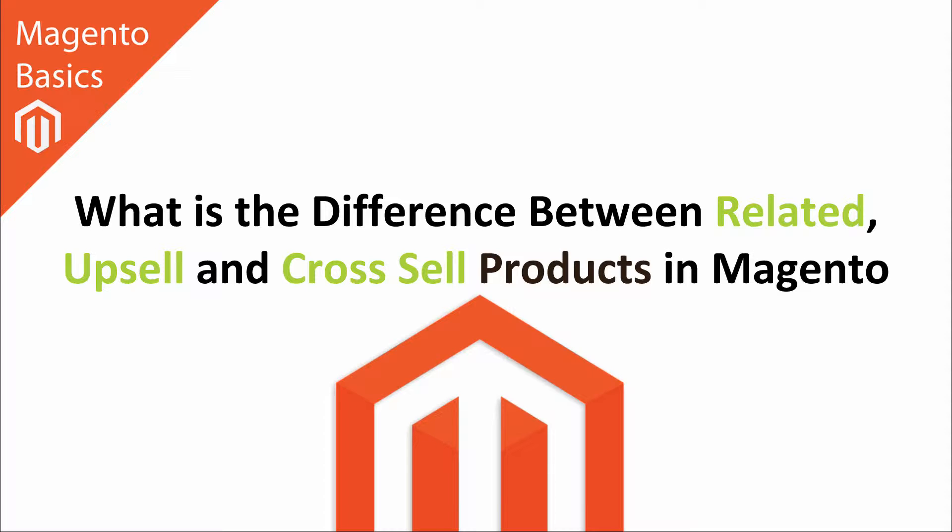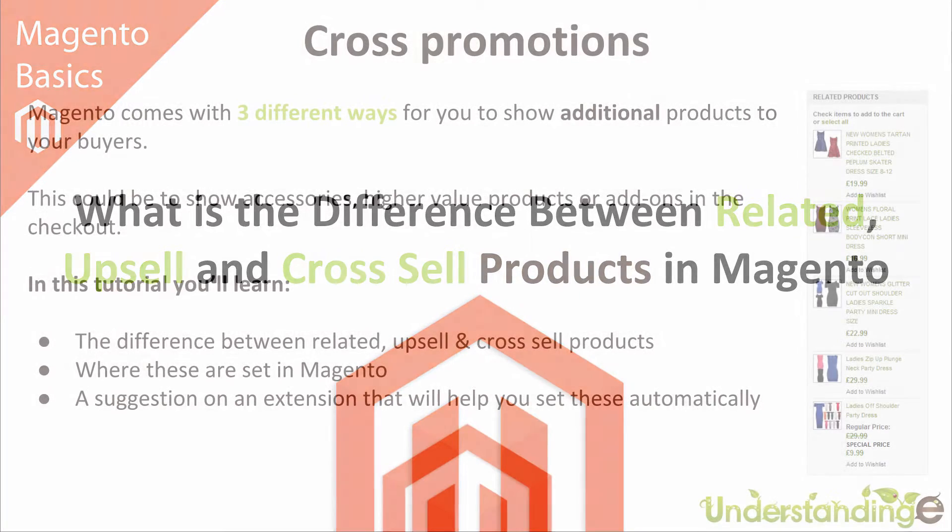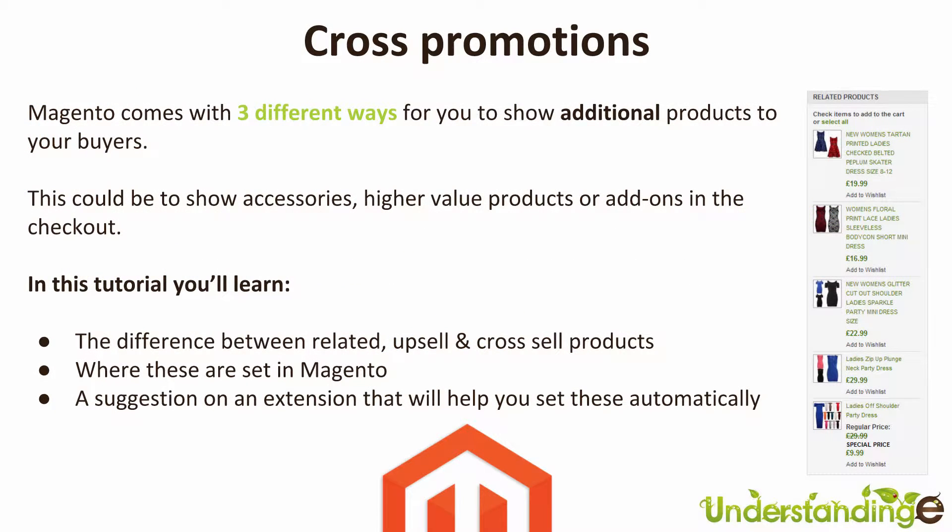Let's do a little bit of theory first. There are three different ways that you can show additional products to your buyers. Let's pretend that your customer is looking at a rucksack on your Magento website — Magento does come bundled with three different options to show additional products to them.